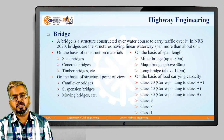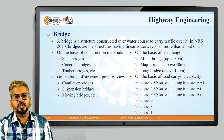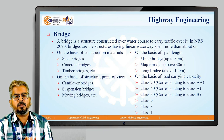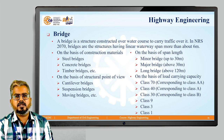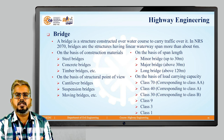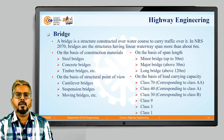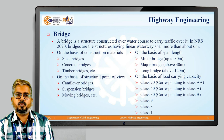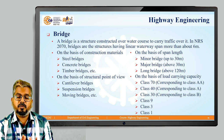Then we have bridges. A bridge is a structure constructed over a water course or any obstacle to carry traffic over it. According to NRS 2070, bridges are the structures having a linear waterway span of more than about 6 meters. Bridges can be classified on various factors. On the basis of construction materials, we have steel bridges, concrete bridges, timber bridges, etc. On the basis of structural point of view, we have cantilever bridges, suspension bridges, moving bridges, etc. On the basis of span length, we have minor bridges up to 30 meters, major bridges above 30 meters, and long bridges above 120 meters.